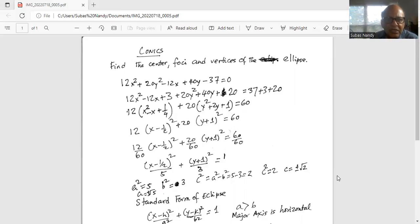Then from the next three terms on the left hand side, I take out 20. I get y square plus 2y plus 1 equal to 37 plus 3 plus 20, which is 60.